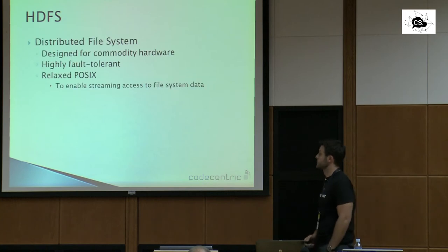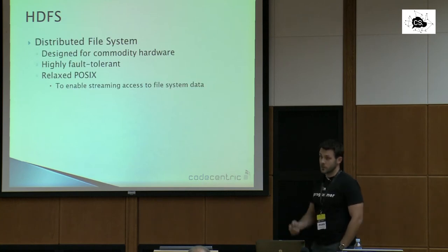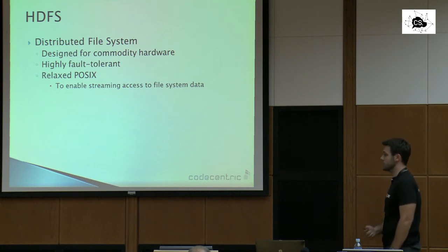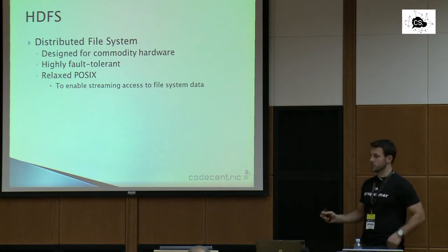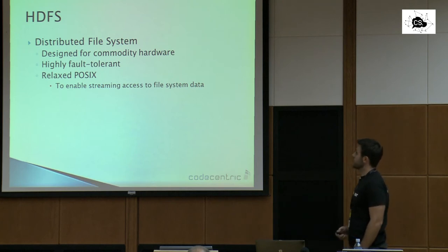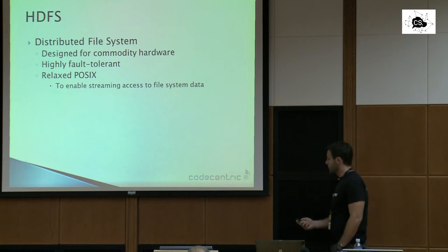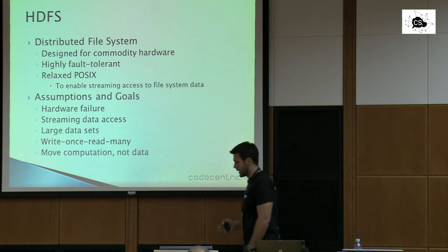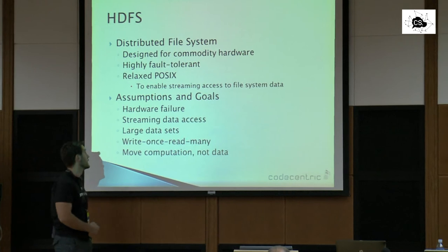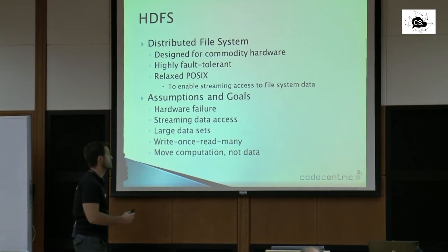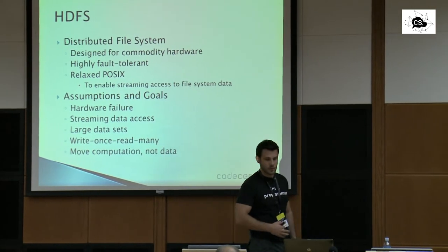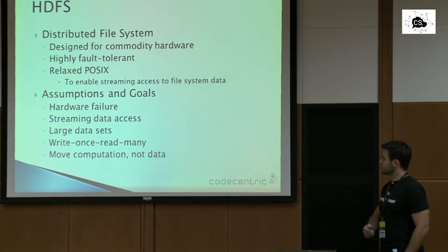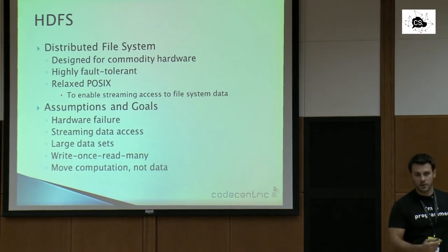HDFS — Hadoop Distributed File System — is part of the Hadoop platform. It's designed to run on a large number of machines using commodity hardware, meaning cheap rack servers, not one big database server. It is highly fault-tolerant. The assumption is that in a cluster of hundreds or thousands of boxes, some will fail, so you need to be able to easily switch them in and out, and data must be easily accessible.